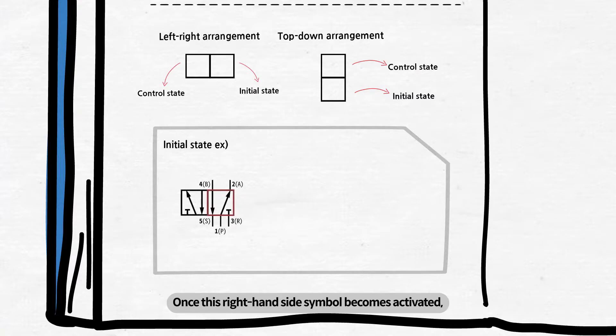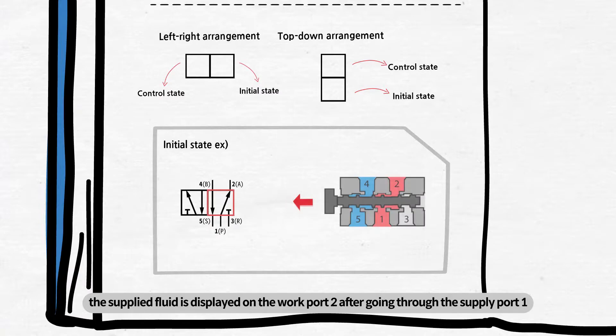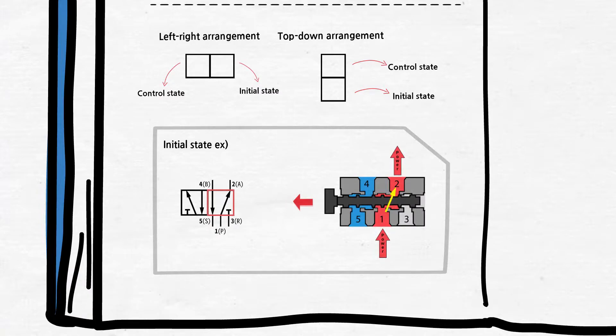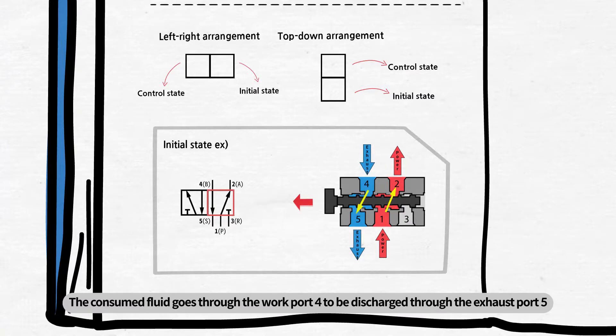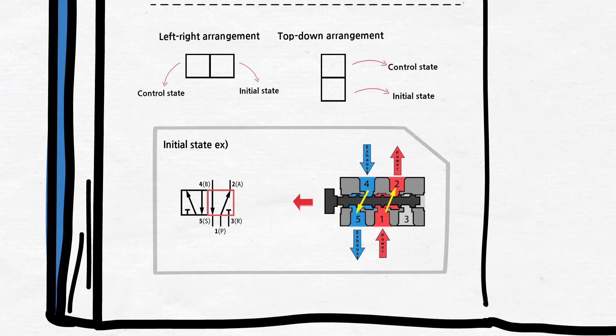Once this right-hand side symbol becomes activated, the supplied fluid is displayed on the work port 2 after going through the supply port 1. The consumed fluid goes through the work port 4 to be discharged through the exhaust port 5, and the port 3 is blocked from fluid flow.